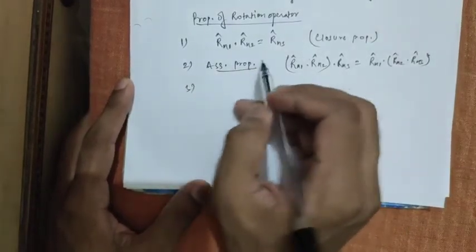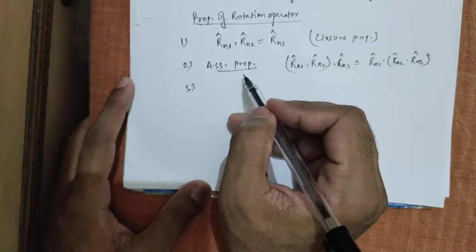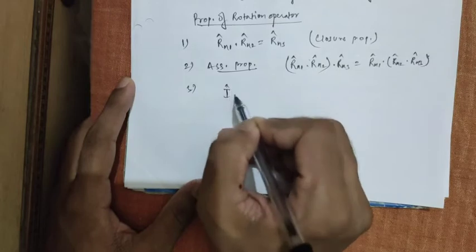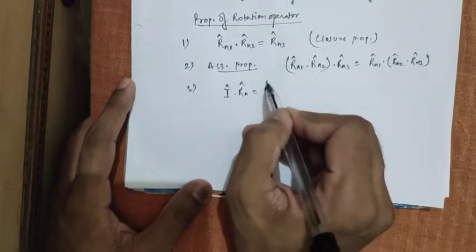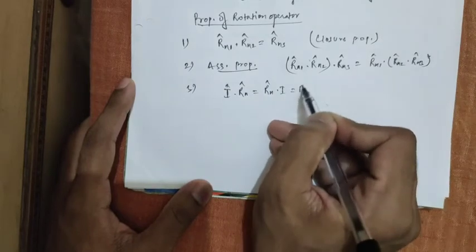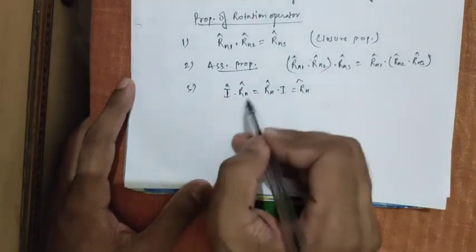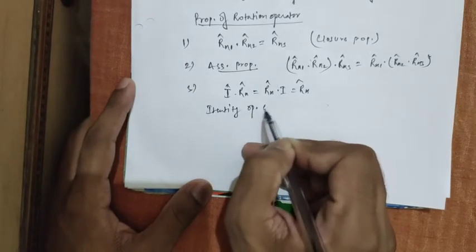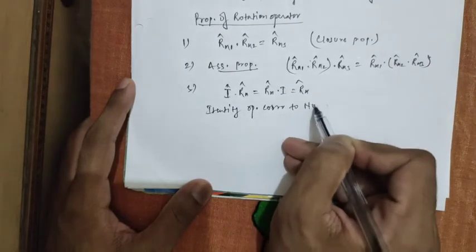Third one is that the identity operator. Identity operator in rotation is simply corresponds to no rotation. So, I dot Rn equals to Rn dot I. Identity operator corresponds to no rotation.